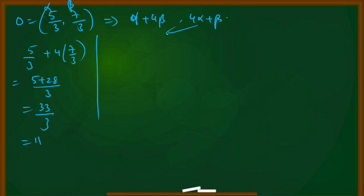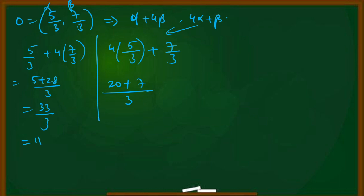Second root: 4 alpha + beta = 4·(5/3) + 7/3 = 20/3 + 7/3 = 27/3 = 9. So the second root is 9.